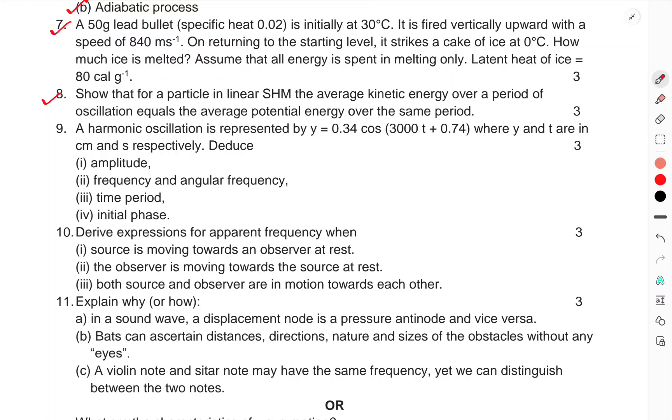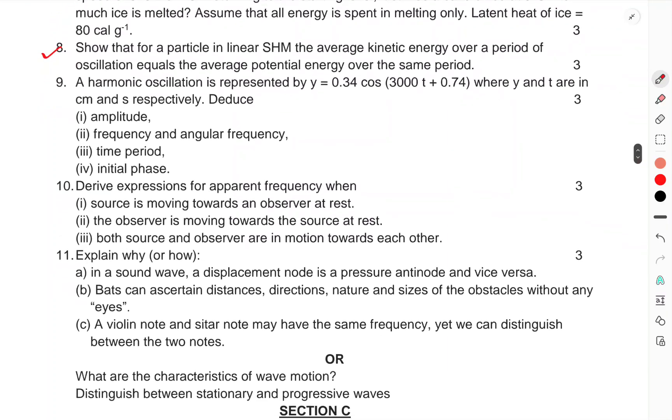Question 9. A harmonic oscillation is represented by y = 0.34 cos(3000t + 0.74) where y and t are in centimeters and seconds. Find (i) amplitude, (ii) frequency and angular frequency, (iii) time period, and initial phase.